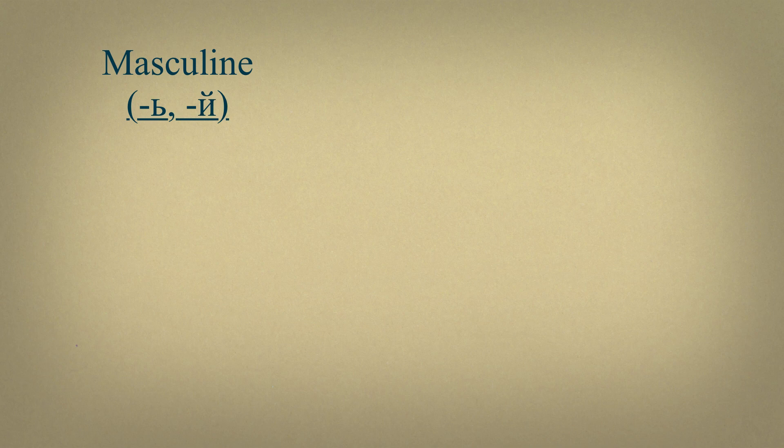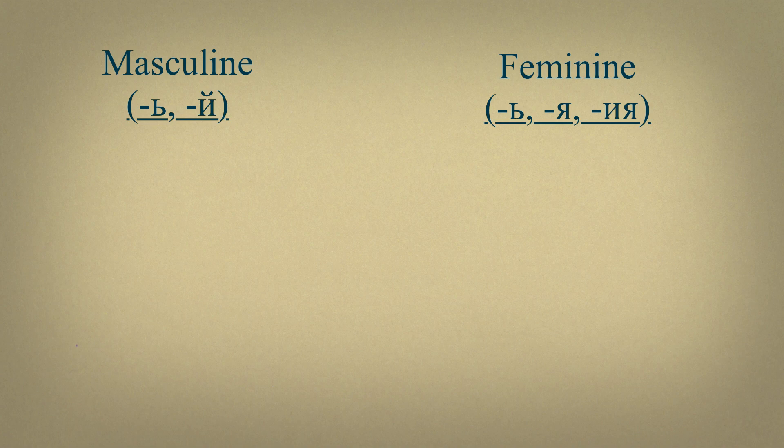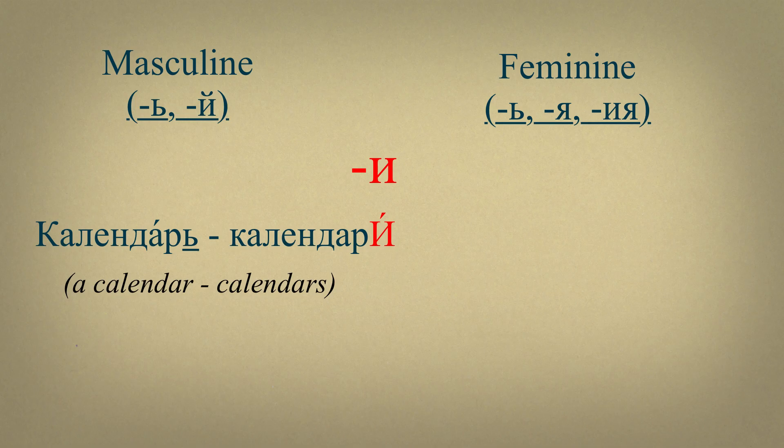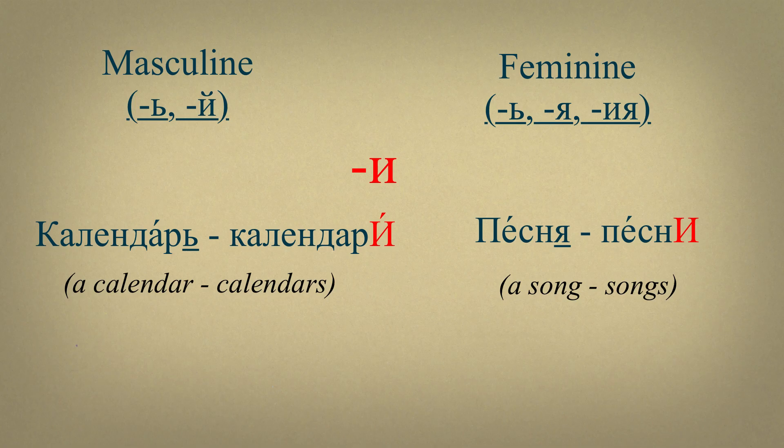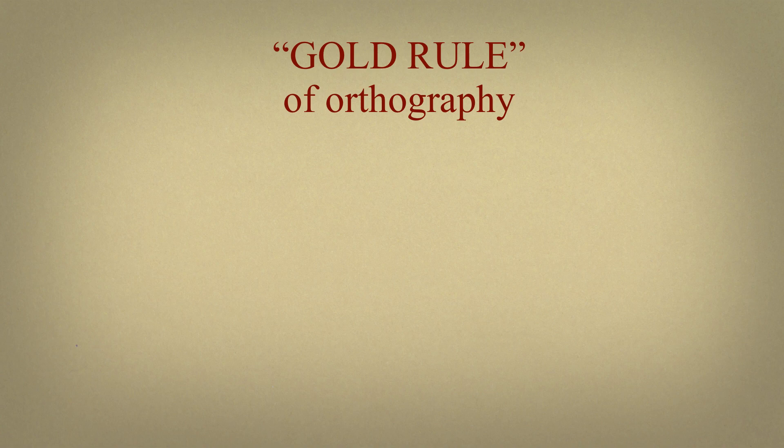Nouns of masculine gender which have endings мягкий знак, Й, and feminine gender with endings мягкий знак, Я, and ИЯ, have an ending И. For example, календарь, календари, песня, песни. Календарь is masculine, песня is feminine. There is a gold rule in Russian orthography.